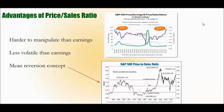Advantages of price-sales: first, it's harder to manipulate than earnings. One of the reasons investors like price-sales is that earnings is a more complex calculation — depending on how you calculate revenue and expenses, it can be manipulated to create a different financial picture than the actual underlying reality. Sales is a harder number to manipulate because it's so simple, making it more meaningful and accurate. Another key component is that it's less volatile than earnings.